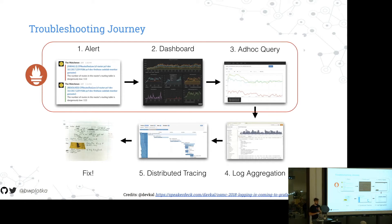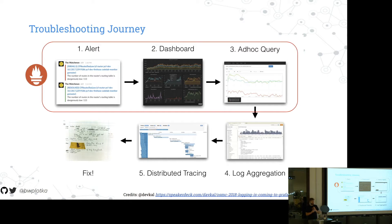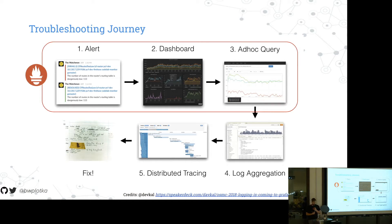So what does the Prometheus project actually give you in this process? Since Prometheus is an open source monitoring system, it helps with exactly the first three steps, because those heavily rely on metrics — usually whitebox ones, those reported by application internals. And this is exactly what Prometheus is designed for.